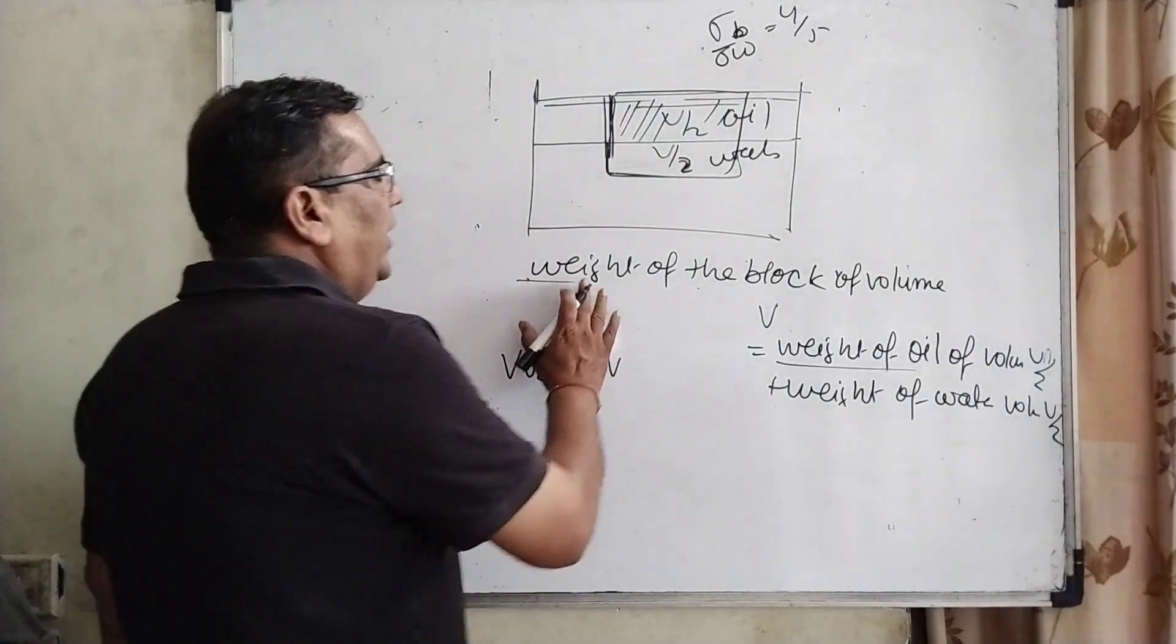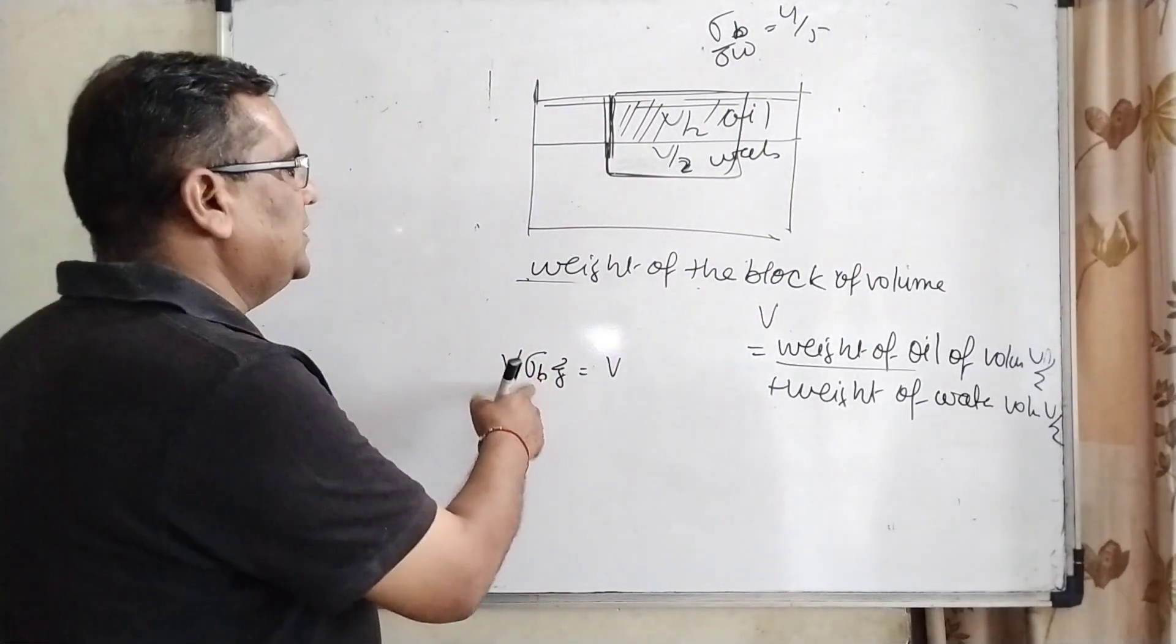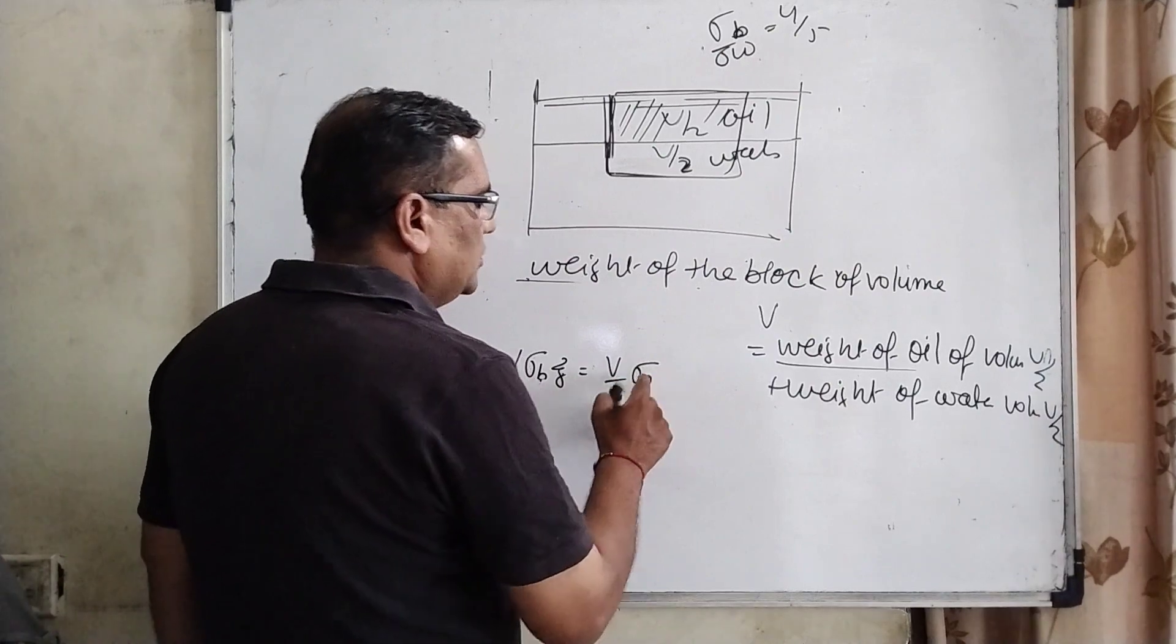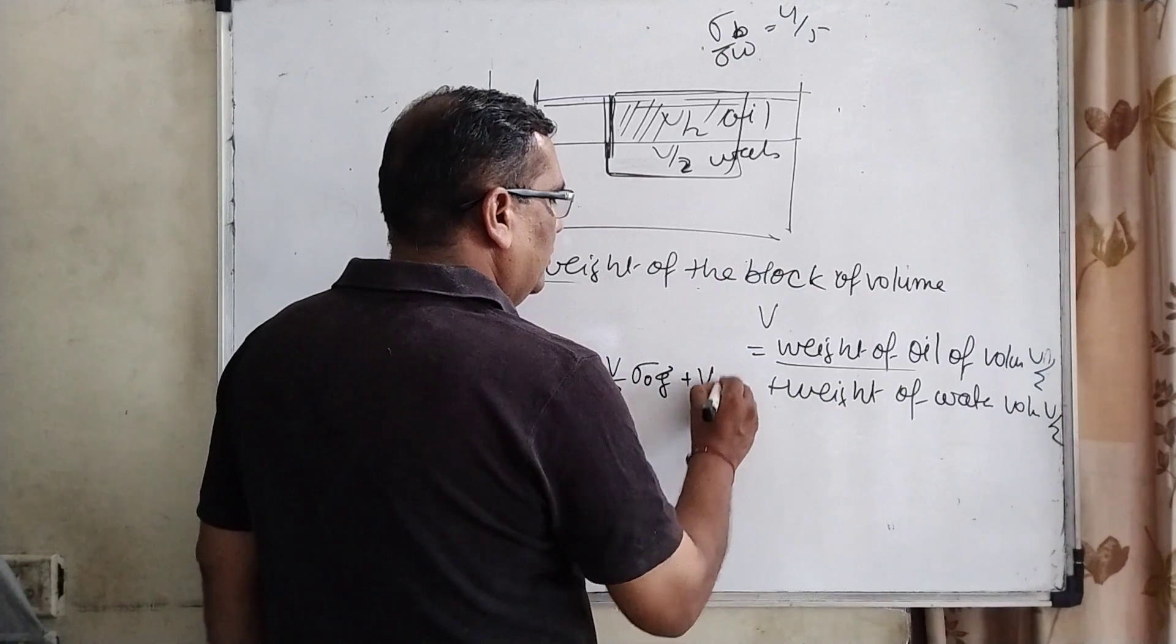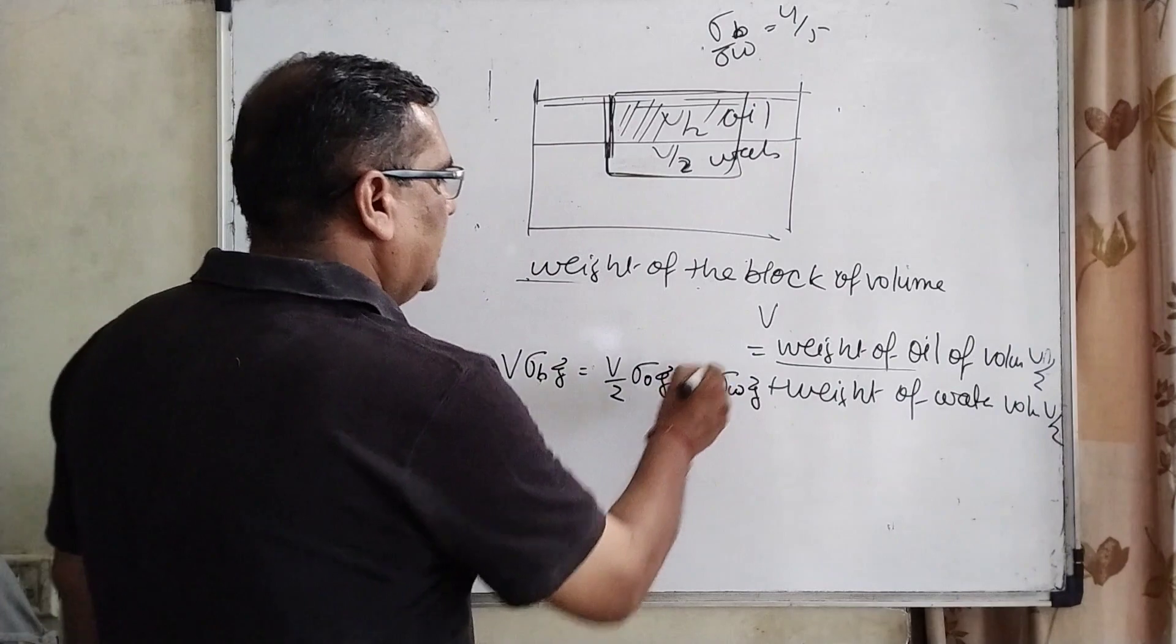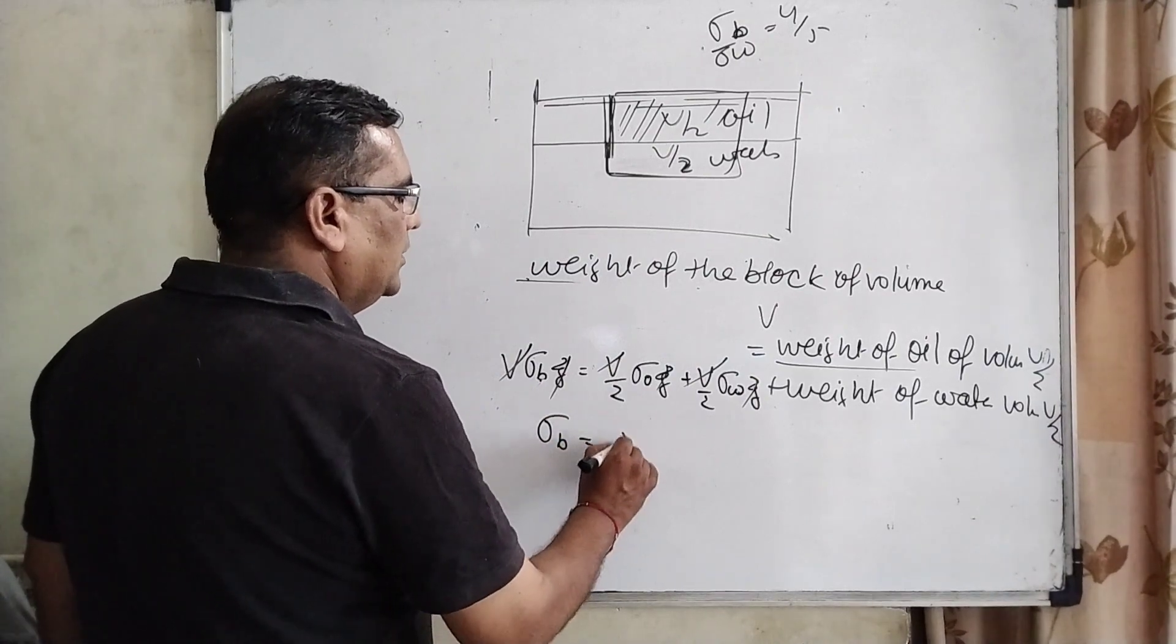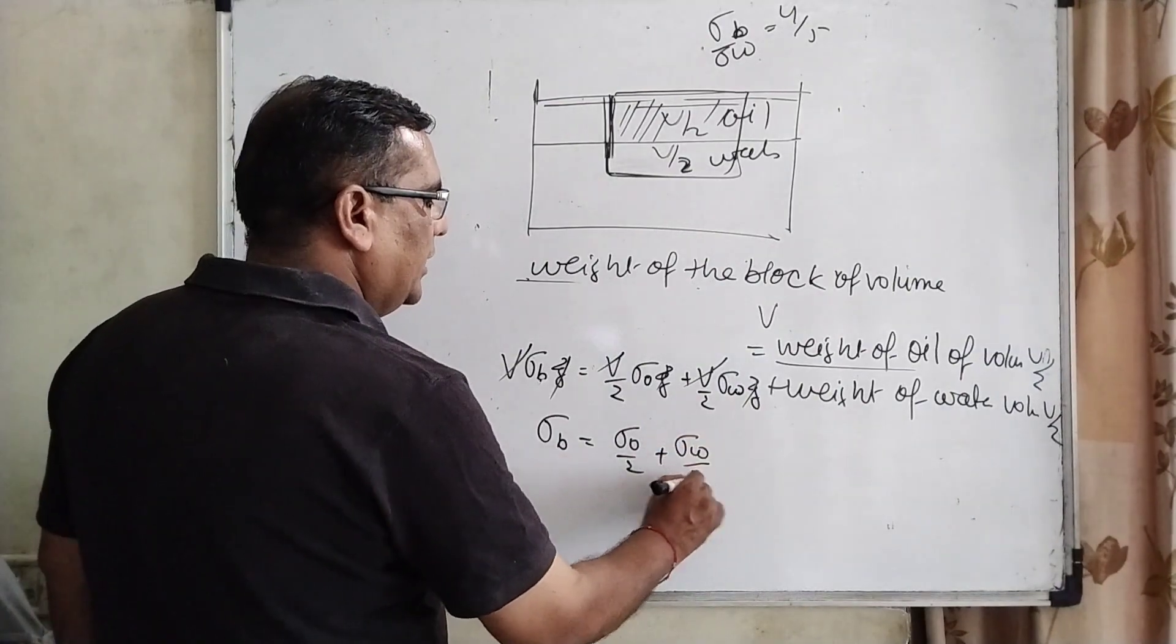Now weight of the block is V times sigma B into G. Sigma B means density of this block. And G equal to V by 2 and sigma O, O means oil, and G plus V by 2 sigma W means density of water and G. You can see that V, V, V get cancelled out. G, G, G cancel out. Then sigma B equal to sigma O by 2 plus sigma W by 2.